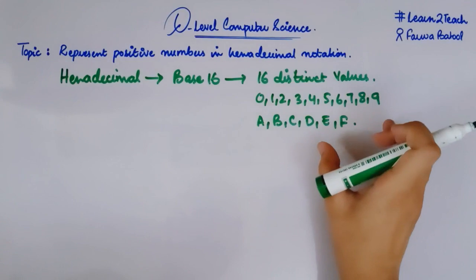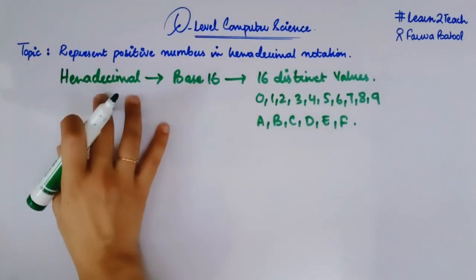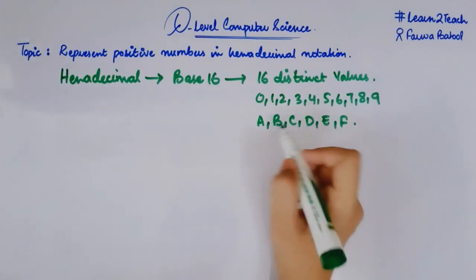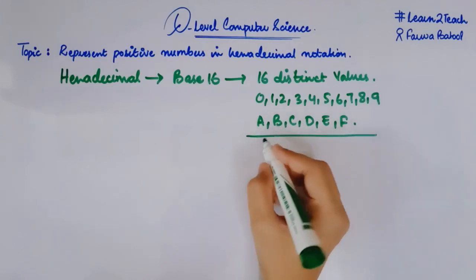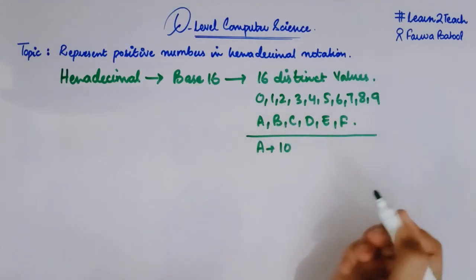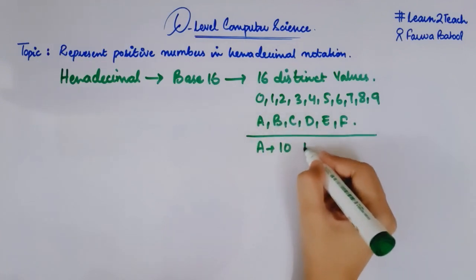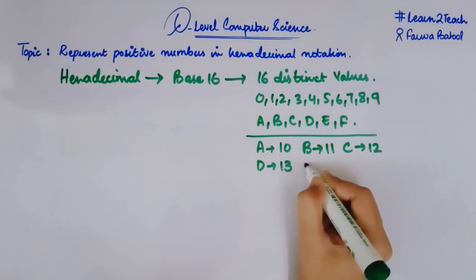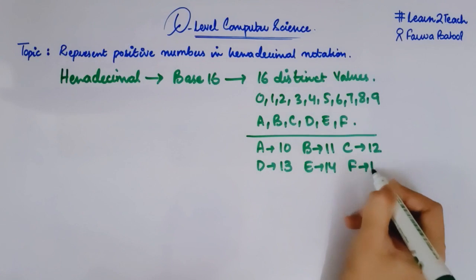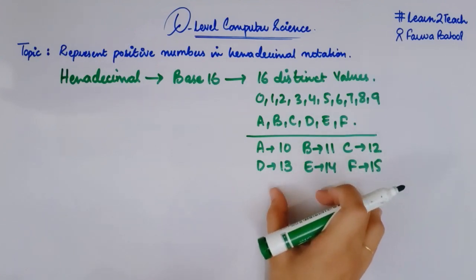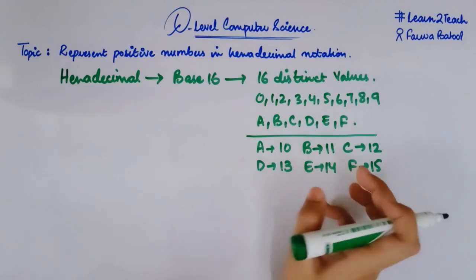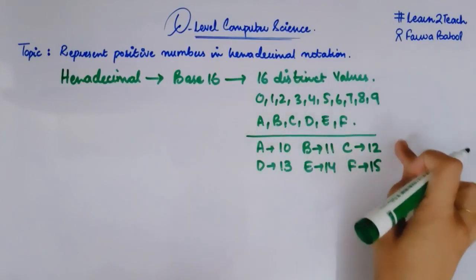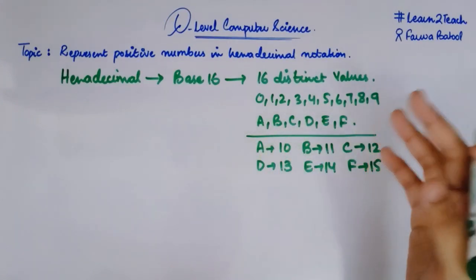These are the 16 alphanumeric values used in a hexadecimal number system to represent any positive number or integer. Now when we talk about these alphabets, they can also be represented in terms of numeric values. A corresponds to 10, B is equal to 11, C equals 12, D equals 13, E is 14 and F is 15. This is because when doing mathematical calculations like conversions, addition, or subtraction with hexadecimal numbers, we need to convert these alphabets into their corresponding numeric values in order to perform such operations.